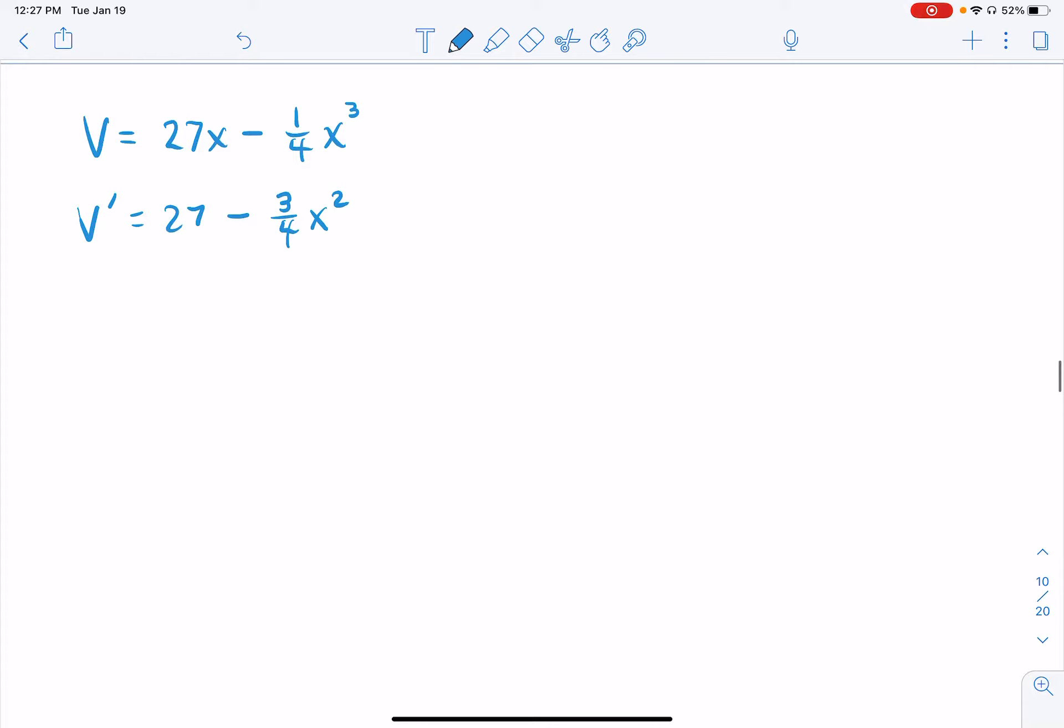I took the derivative so I can find the critical numbers, which is where this thing is equal to zero, or possibly undefined, where it's not going to be, minus 3 fourths x squared. Solve this thing for x.